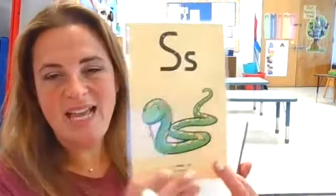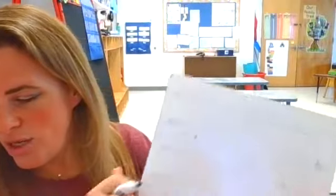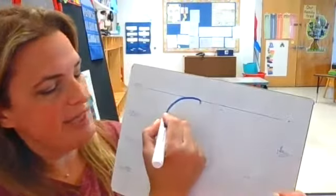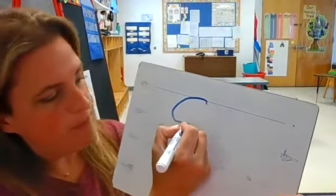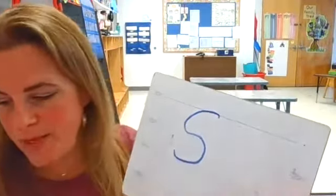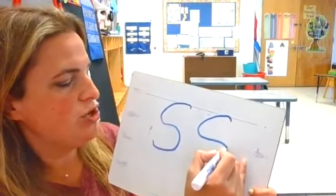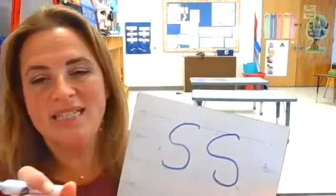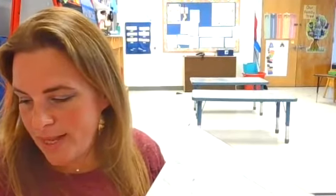S, snake, ss. So you're going to start at the skyline. You're going to trace backwards to the plain line. Curve it to the plain line, then curve it around to the grass line. Stop. S, snake, ss. Next letter.